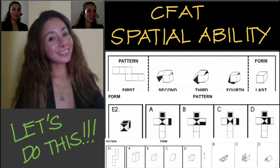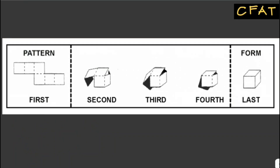In this video we'll be working on spatial ability, and I've put some problems here for you to practice on. In each problem you'd be given pictures, and the first picture — which is the pattern — can be folded or unfolded. You have to decide which form would be made by folding or unfolding the pattern. For example, this first picture here is our pattern; it's already unfolded, so we have to fold it into a certain form or shape.